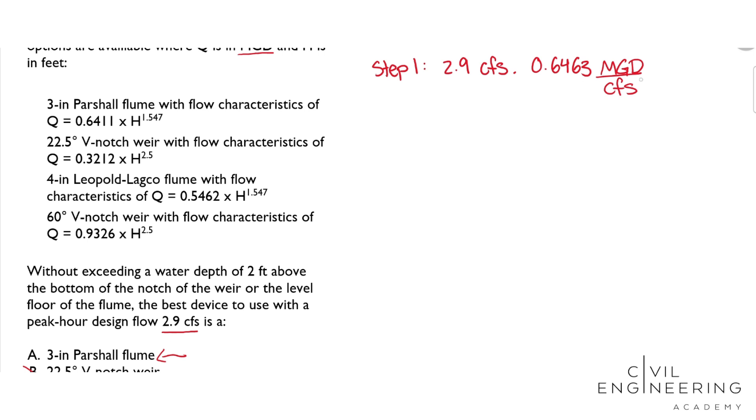This just comes from your conversion charts in the PE reference handbook, and we will get Q equal to 1.874 MGD. Perfect.